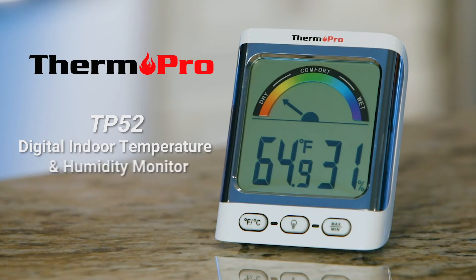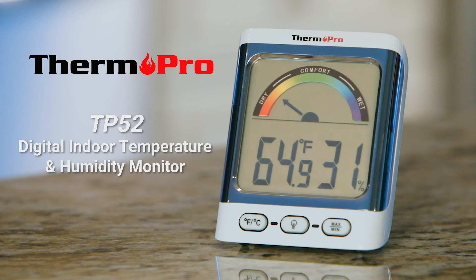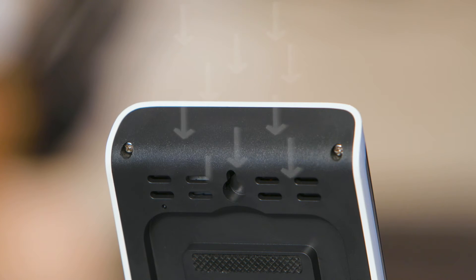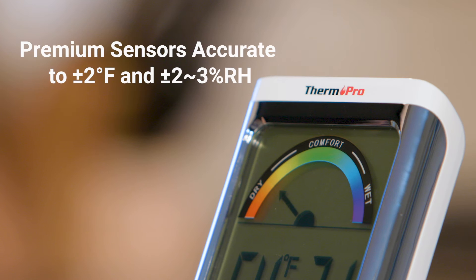Monitor your home's indoor air conditions like a pro with the ThermoPro TP52 Digital Indoor Temperature and Humidity Monitor. The TP52 features highly accurate premium sensors that provide temperature and humidity readings for your living environment that are accurate to plus or minus 2 degrees Fahrenheit and plus or minus 2-3% relative humidity.